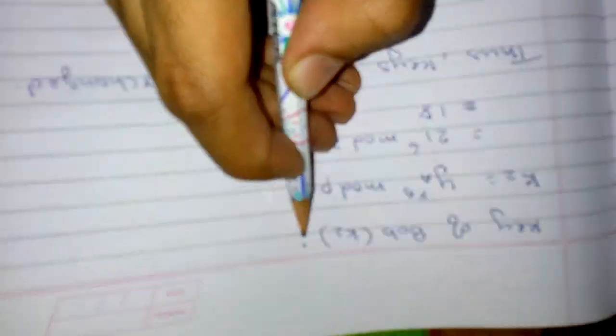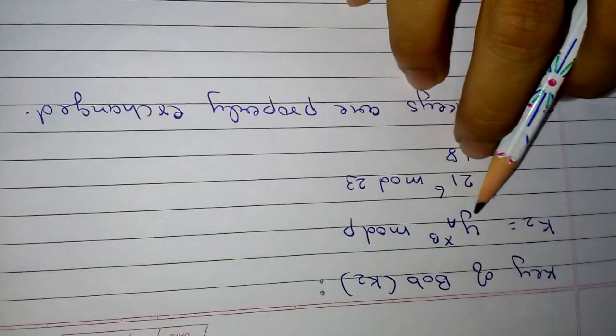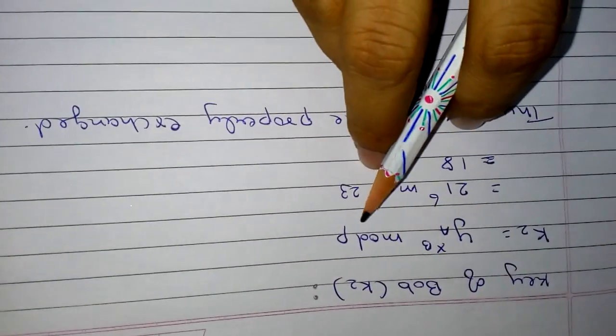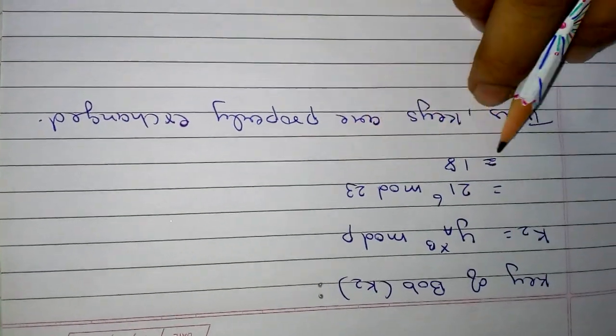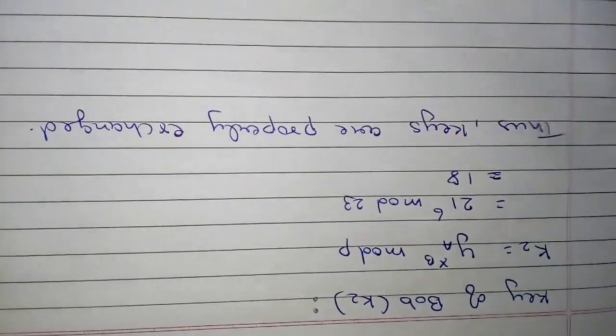Now let's find key of Bob. So Bob's key, let's call it k2. So k2 is ya raised to xb mod p, which gives 21 raised to 6 mod 23. When you solve it, you will get the answer 18.